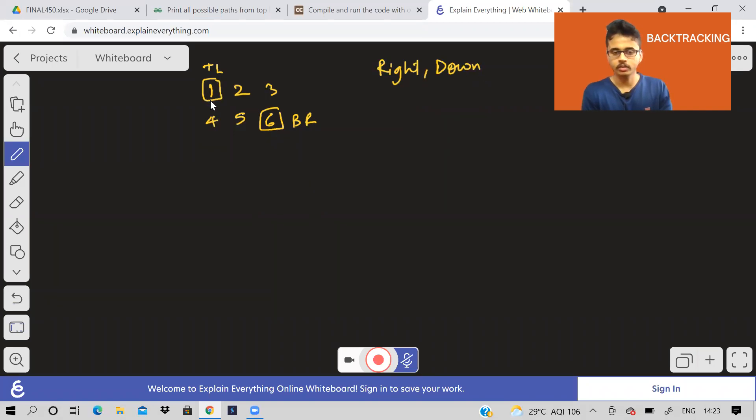So how can I go now? For example, one way can be from top left, this cell, I'll go down. So 1, 4, then right, then right. So this is one way. Another way can be from top left, take right, then take down, then go right again to reach bottom right. Another way can be from 1, go to 2, from 2, go to 3, then go down to 6. So these are the three ways.